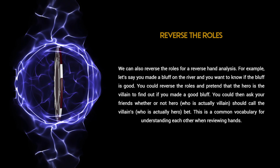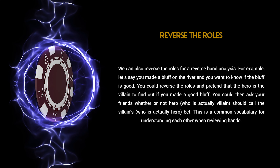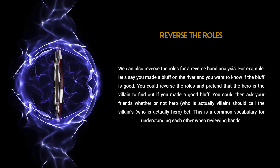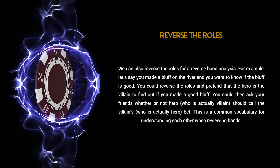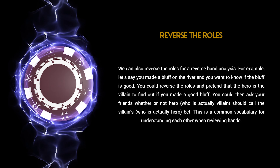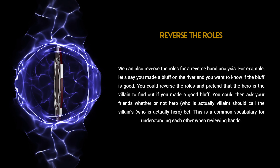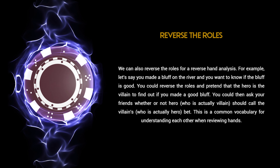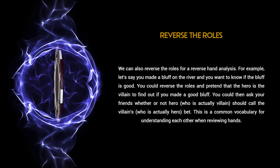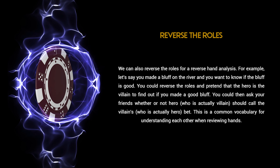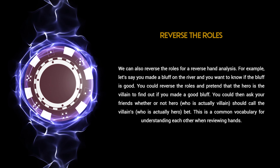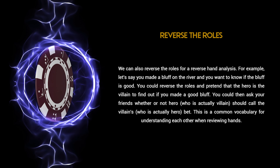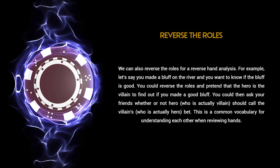For example, let's say you made a bluff on the river and you want to know if the bluff is good. You could reverse the roles and pretend that the hero is the villain. To find out if you made a good bluff, you could then ask your friends whether or not the hero, who is actually the villain, should call the villain's, who is actually hero, bet. This is common vocabulary for understanding each other when reviewing hands.